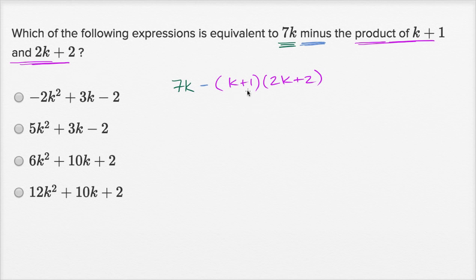And so let's see, to kind of expand it all out, we will want to multiply these two expressions. So let's do that first. So it's going to be 7k minus, and then let's just multiply this out.